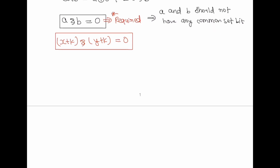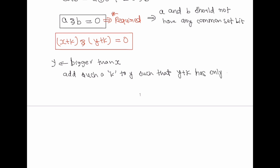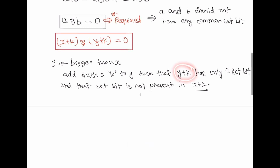This means no bit set in b should also be set in a, and vice versa. Let's think greedily. Let's suppose y is our bigger number. We can make y plus k a value that has only one set bit, specifically a bit not present in x plus k. We add such a k to y so that y plus k becomes an exact power of 2.